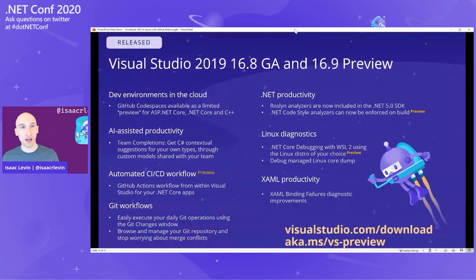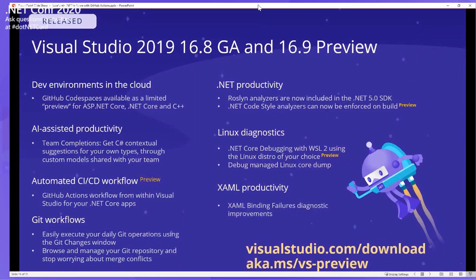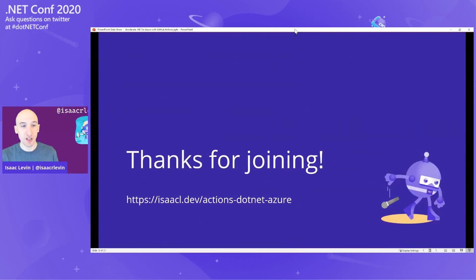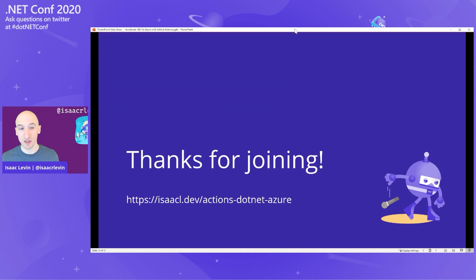One thing to call out: I showed you the Visual Studio ability to generate the workflow file — that's in preview and it's going to come out to GA with Visual Studio 16.8 or 16.9. There are also other really cool things in Visual Studio like Codespaces that you should definitely play around with. If you have questions or want to look at the resources, there's a link at isaacl.dev/actions-dotnet-azure — the talk and repo are already available on GitHub.